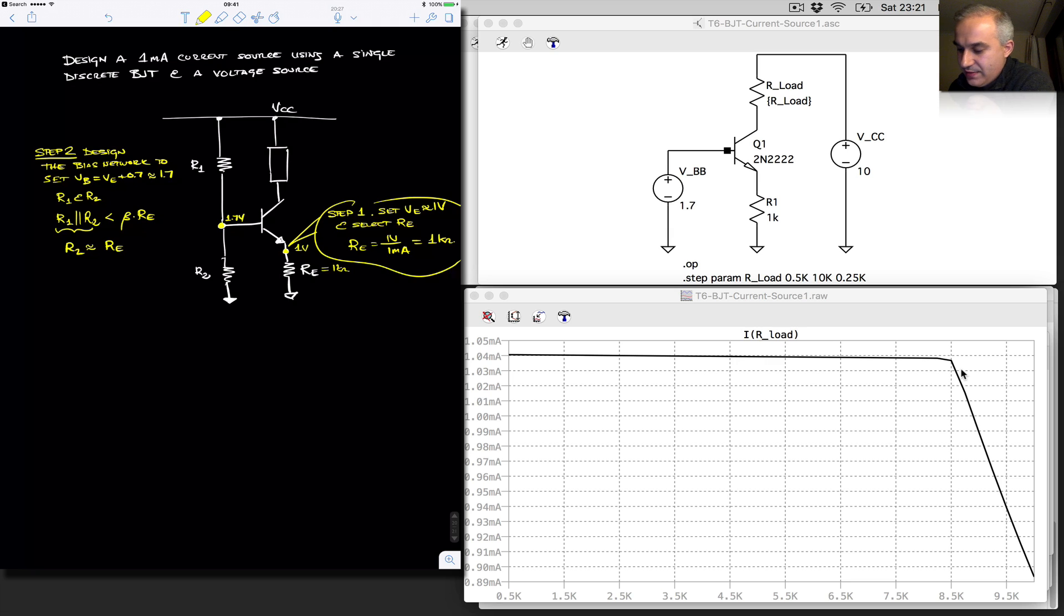So in this case, a good rule of thumb is that R2 should be set approximately equal to RE, and it will meet these requirements. So in this case, R2 equals to 1 kilo ohm. Let's see if that will work. And again, remember why that's the case. The parallel combination of these two is going to be smaller than R2.